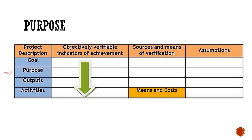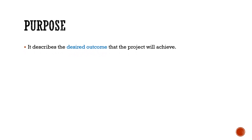The second terminology is the purpose. The purpose is to describe the desired outcome. In the second row, you write the desired outcome — the immediate development outcome of the goal. The purpose or outcome can be written in bullet-wise form, but it should be clear and brief. The logical framework should make the purpose clearly understandable to the funding agency.